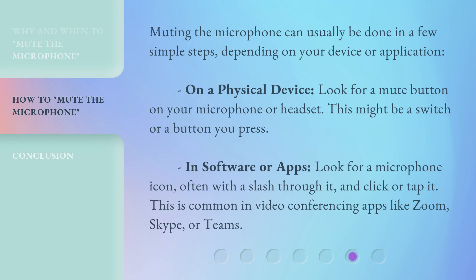Muting the microphone can usually be done in a few simple steps, depending on your device or application. On a physical device, look for a mute button on your microphone or headset — this might be a switch or a button you press. In software or apps, look for a microphone icon, often with a slash through it, and click or tap it. This is common in video conferencing apps like Zoom, Skype, or Teams.